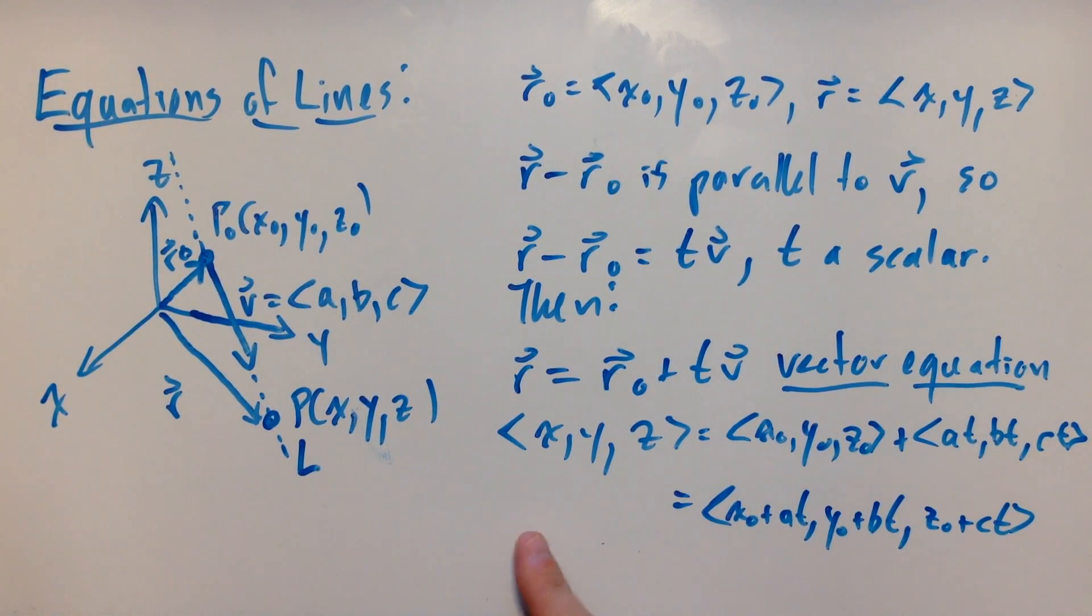In terms of components, this gives us (x, y, z) = (x0, y0, z0) + (at, bt, ct), which you can add together to get (x, y, z) = (x0 + at, y0 + bt, z0 + ct).